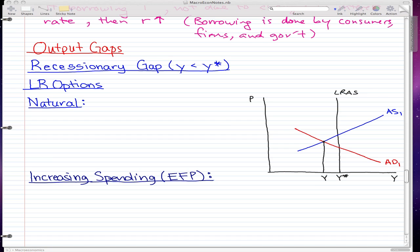So we're back and you guessed it, we're going to do output gaps again. I'm not going to explain recessionary gaps and the graph because you should know by now what they are. We're going to go through the long run options and the first way to fix a recessionary gap is the natural way.